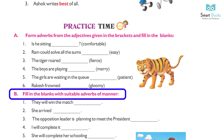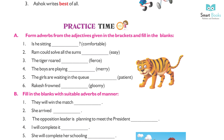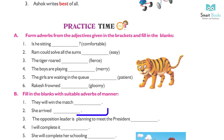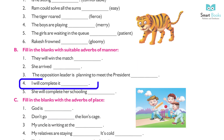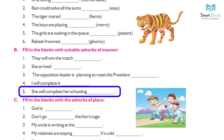Fill in the blanks with a suitable adverb of manner. 6. They will win the match quickly. 7. She arrived well. 7. The opposition leader is planning to meet the president quickly. 8. I will complete it carefully. 9. She will complete her schooling happily.